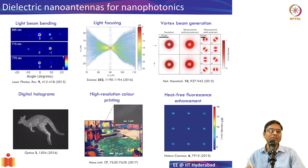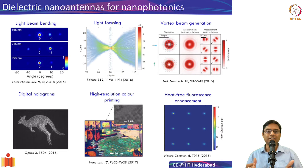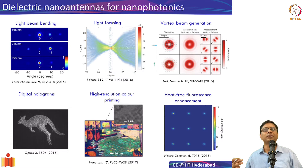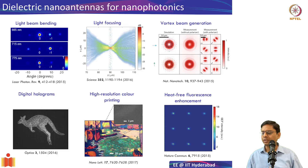With dielectric structures, researchers have demonstrated beam bending into whichever diffraction order you want. You can also focus light like a lens, generate vortex beams with donut-shaped profiles, create structured light, holograms, and structural color — where what appears as real color is actually produced by antennas arranged in a particular pattern. Fluorescence enhancement is also possible, since an engineered semiconductor nanostructure can produce much more efficient fluorescence.